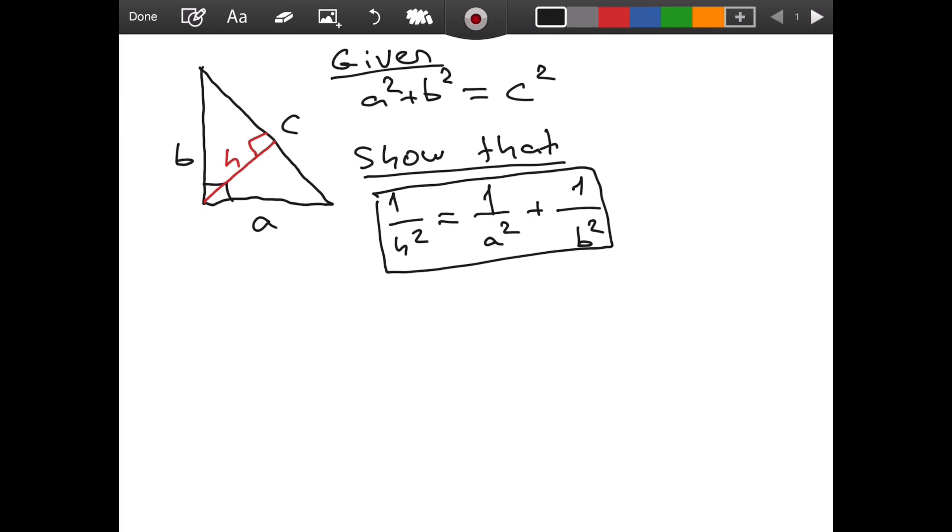Well, we start off by considering the area of our triangle. So, I will use capital A for the area. And what is the area? Well, you can call it 1 over 2 A times B. This is right. But, you could also say, it is also equal to 1 over 2 times C times H.